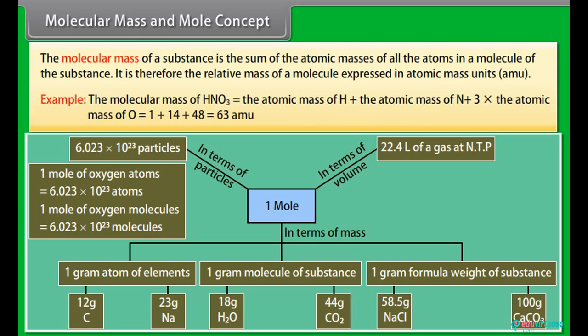Example: The molecular mass of HNO3 is equal to the atomic mass of H plus the atomic mass of N plus 3 into the atomic mass of O, which is equal to 1 plus 14 plus 48, which equals 63 units.